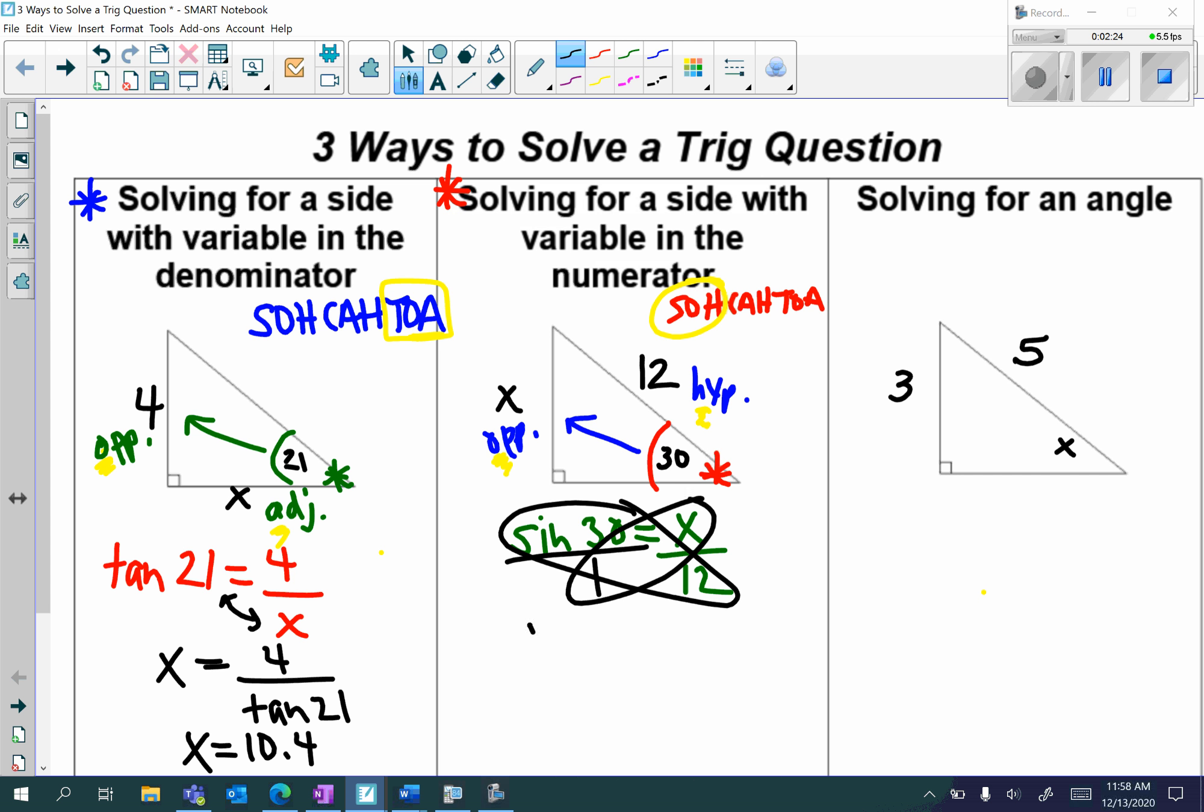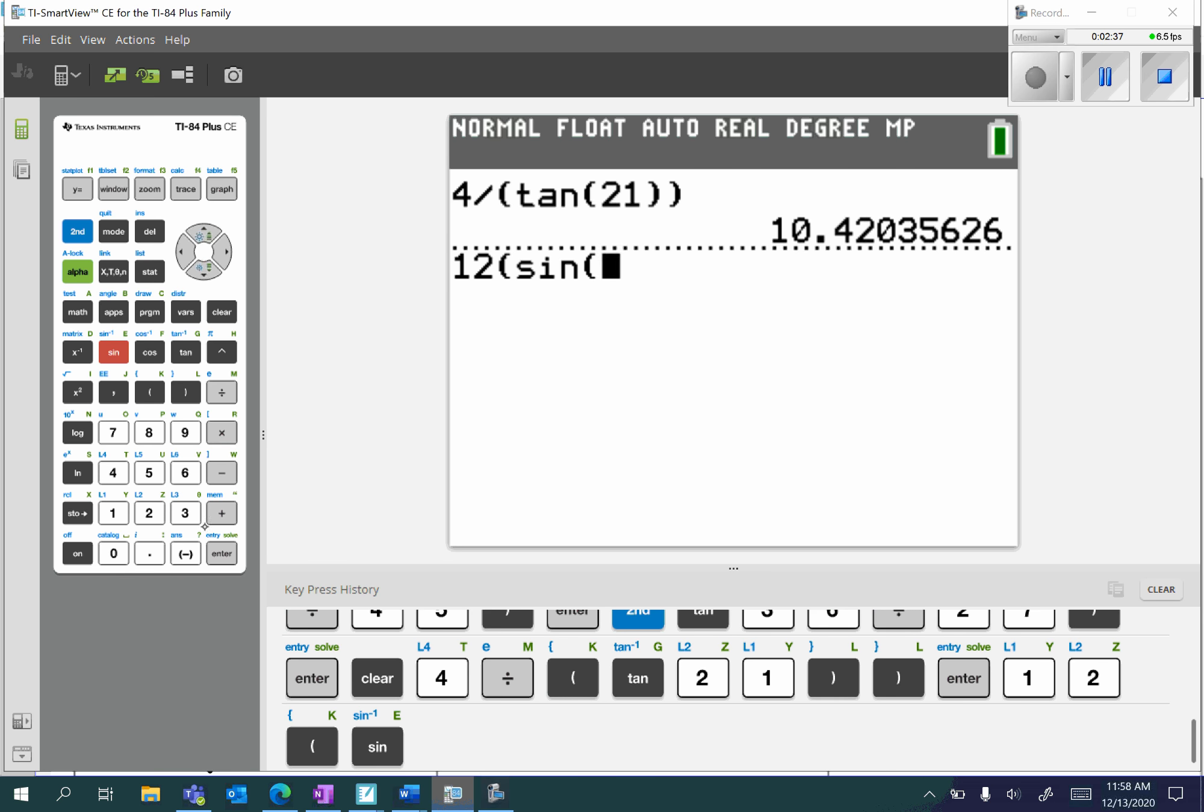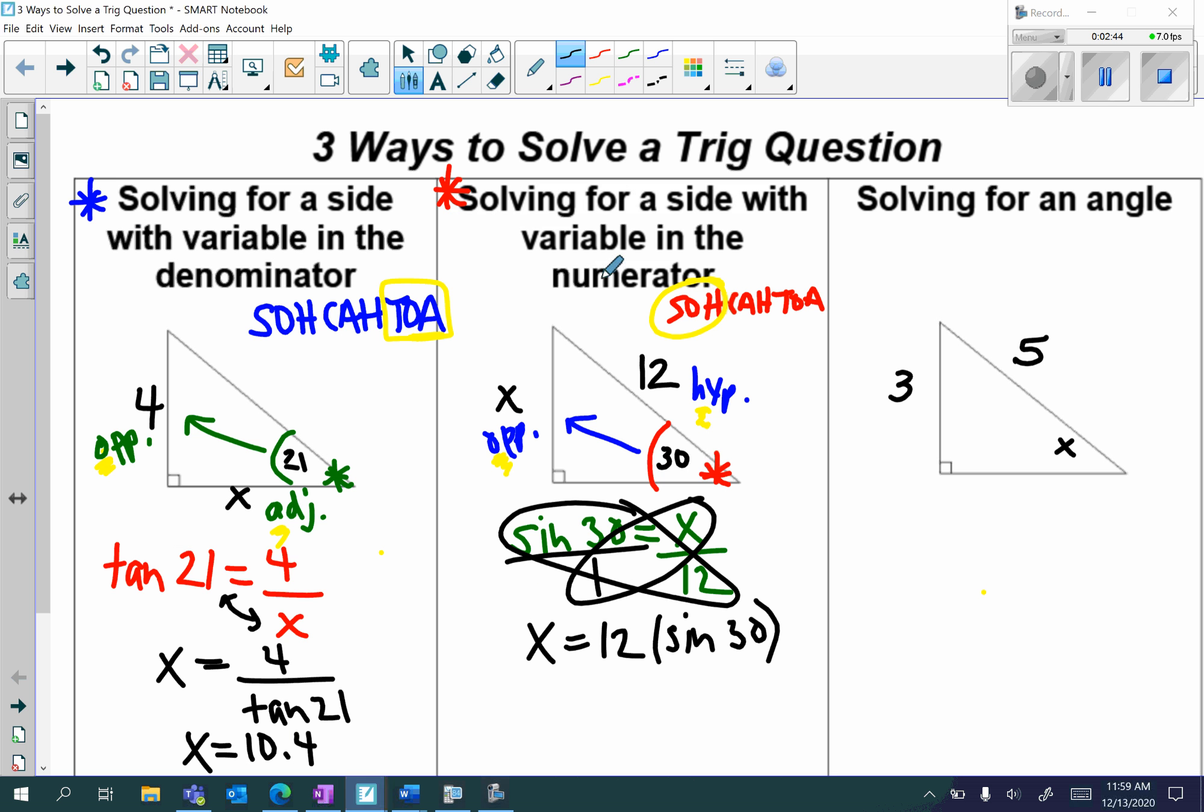So I have x is equal to 12 times sine of 30. Let's put that in our calculator. 12 times sine of 30. And we should get 6. So x is going to be equal to 6.